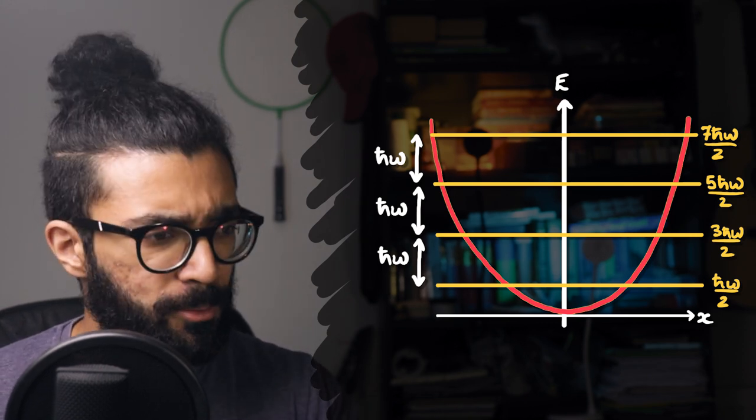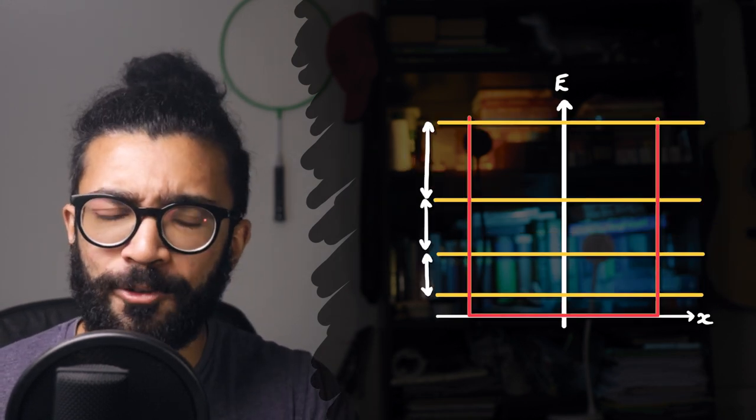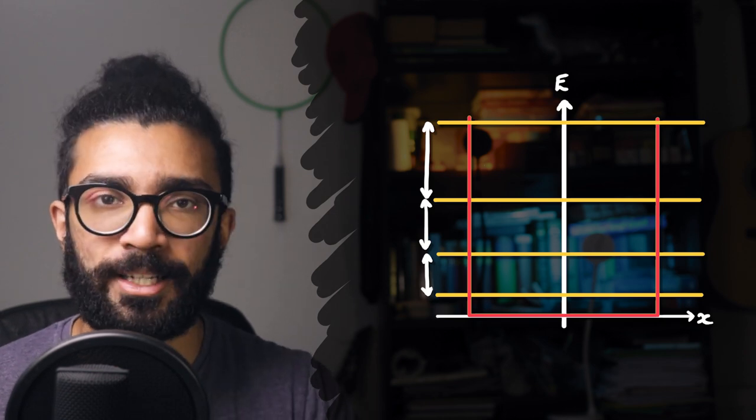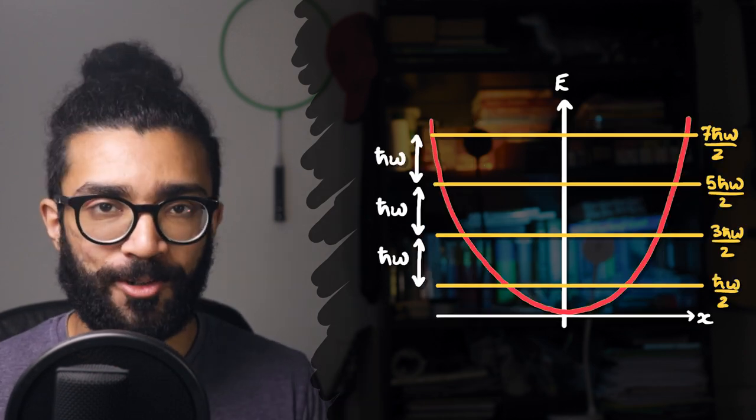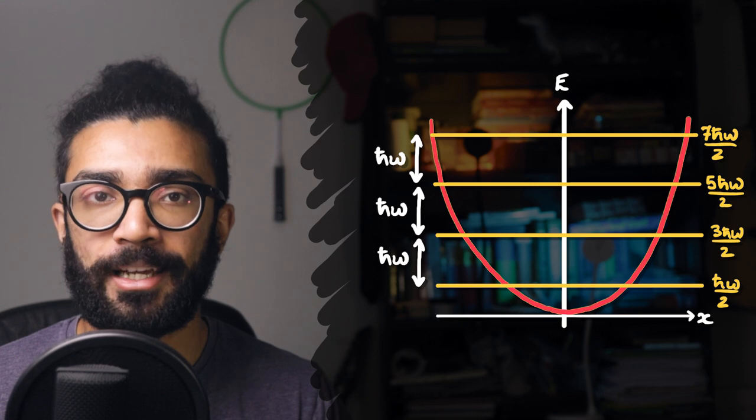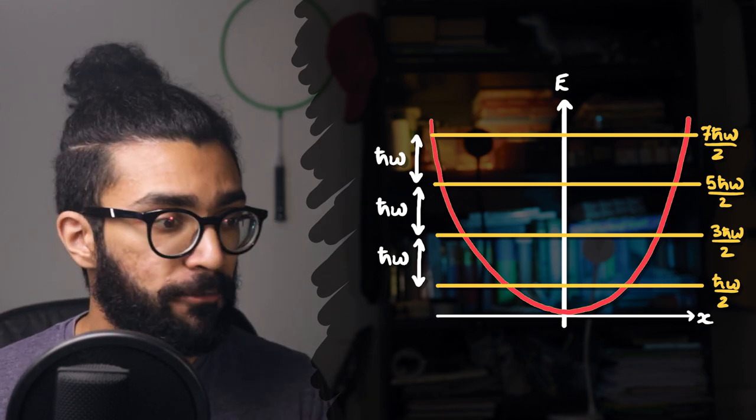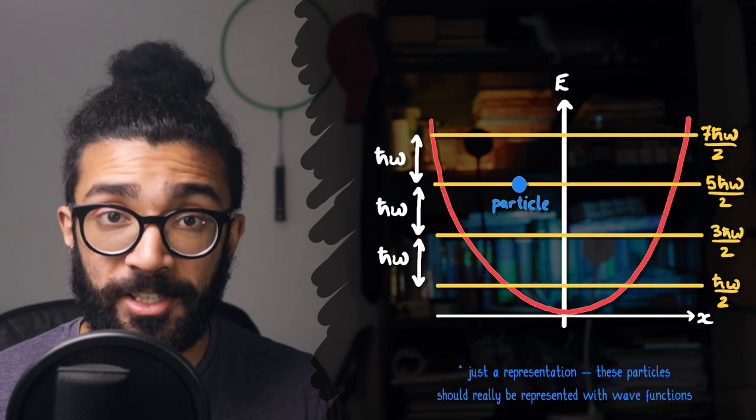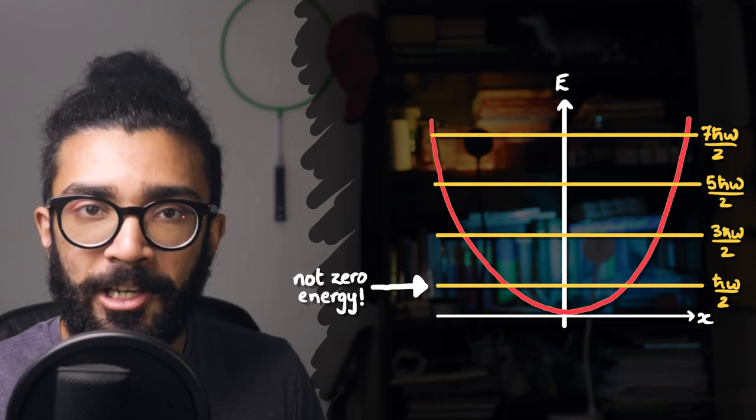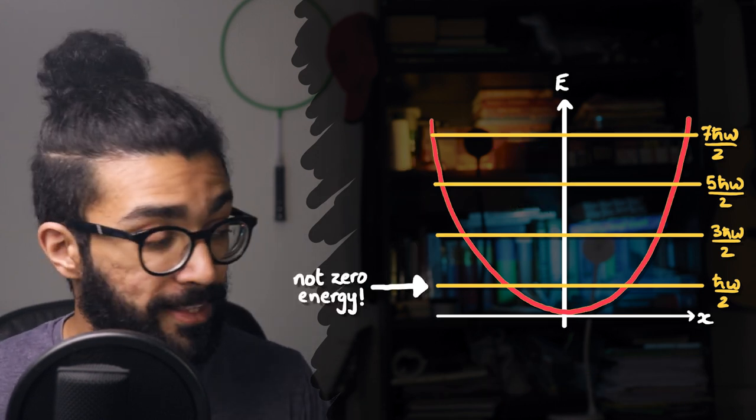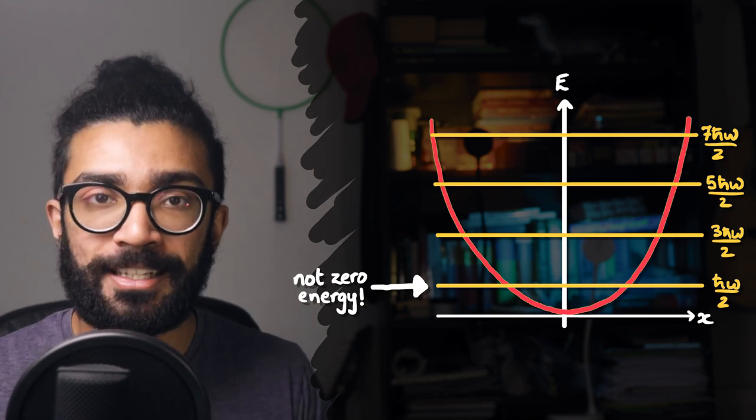This is not necessarily true for other potential wells, such as the square well, for example, which is one of the first things that you study when you learn quantum mechanics. But for a quadratic potential well, the energy levels are equally spaced. Now, another interesting thing to note is that every particle must be in one of these energy levels, and this is the lowest possible energy level. That lowest possible energy is not zero.